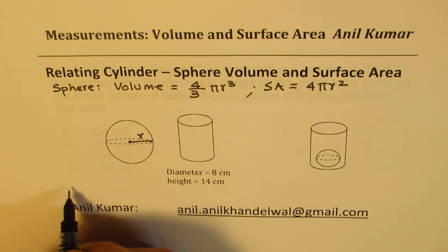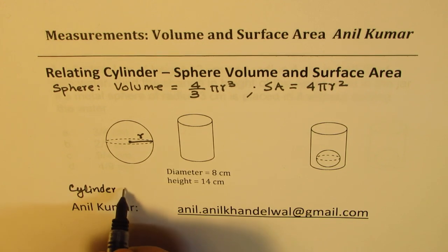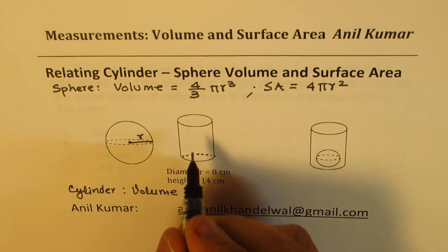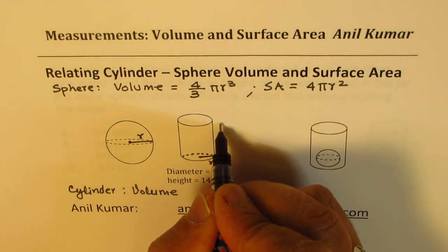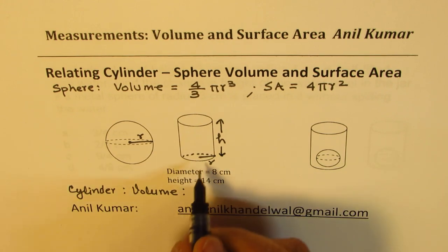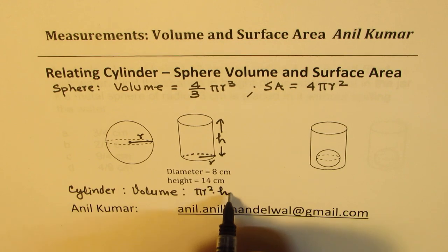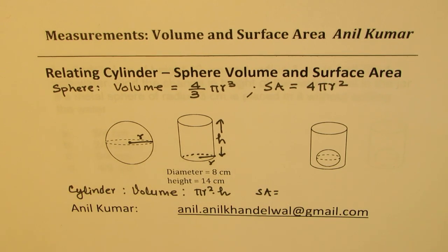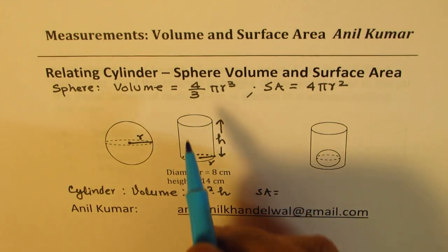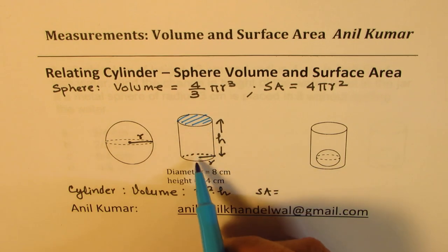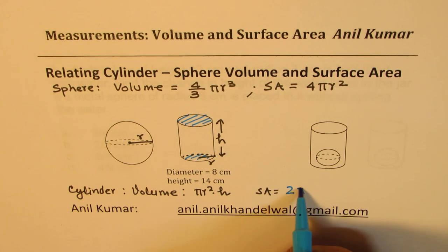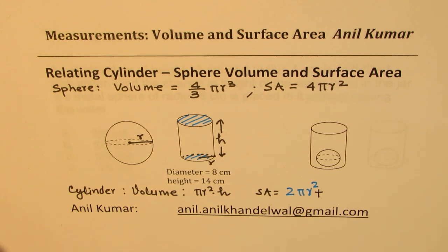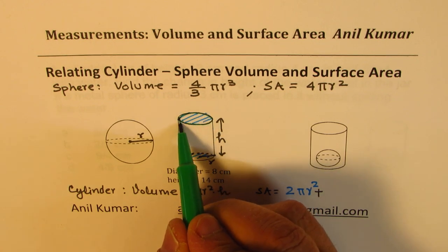When we talk about a cylinder, the volume of a cylinder is the area of the base times height. The base is circular with radius r, and height h. So the area of the base is π r², and times height h gives you the volume. As far as surface area is concerned, there are three surfaces for any cylinder. We generally consider two circular surfaces, with area 2π r², and then a lateral curved surface, which is 2π r times the height.